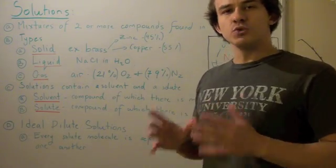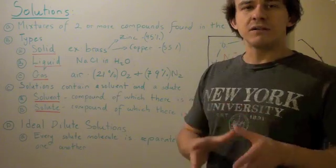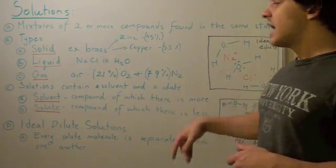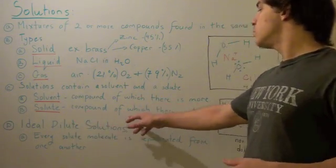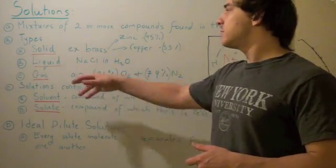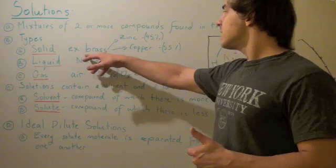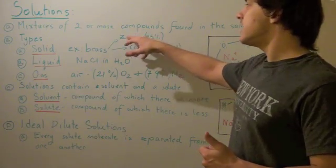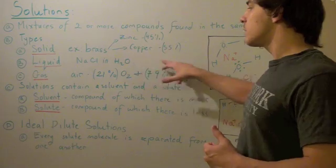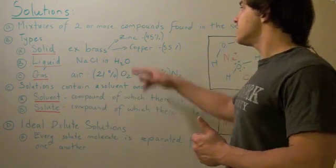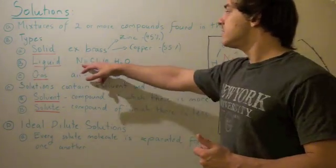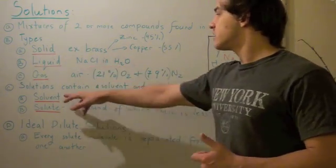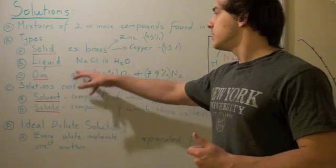Whenever we talk about solutions, it's important to differentiate between the solvent and the solute. The solvent is the compound of which there is more, and the solute is the compound of which there is less. In brass, which is composed of 55% copper and 45% zinc, there's more copper, so copper is the solvent and zinc is the solute. In the saltwater example, there's more water than sodium chloride, so the solvent is water and the solute is the salt.